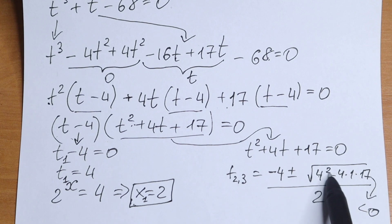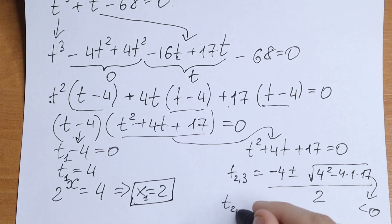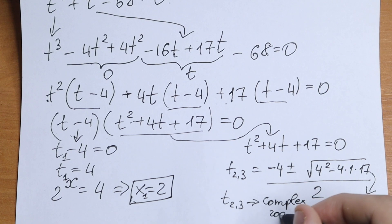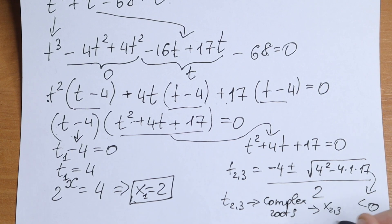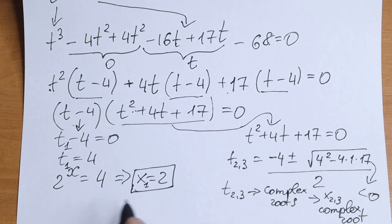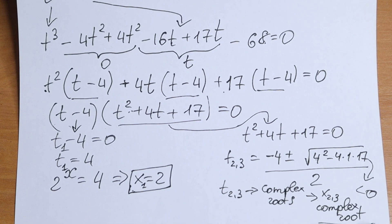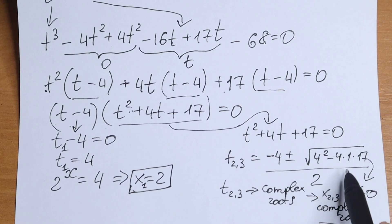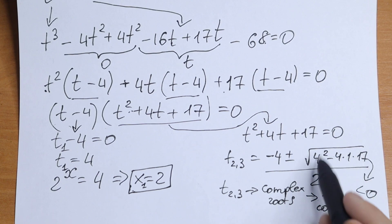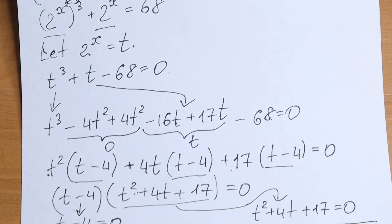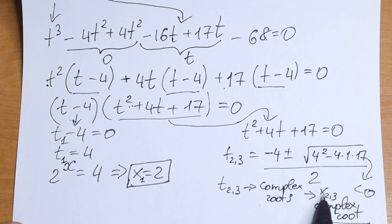Take a look — this discriminant is negative 1 inside the square root. If we take the square root of a negative number we'll have a complex number. So t₂ and t₃ will be complex roots, and as a result x₂ and x₃ will be complex roots as well. If you're interested in these complex roots you can solve it — find the square root using complex numbers, and you will have a logarithm since we'll have 2 to the power x equal to that complex number, then take the log of both sides.